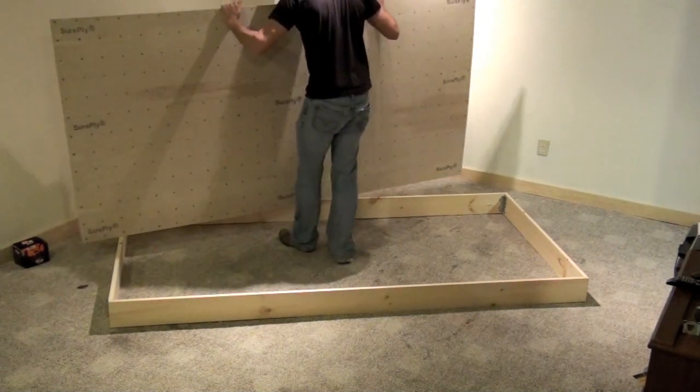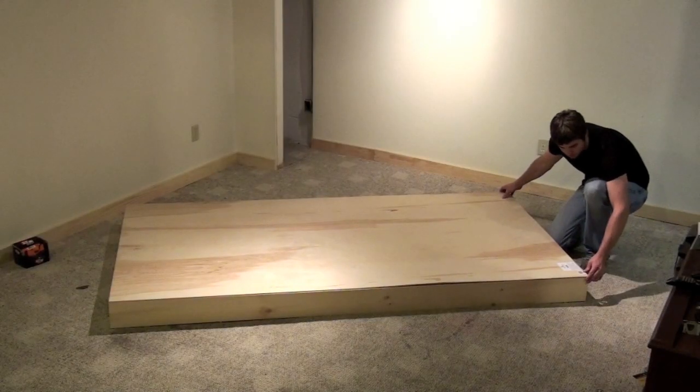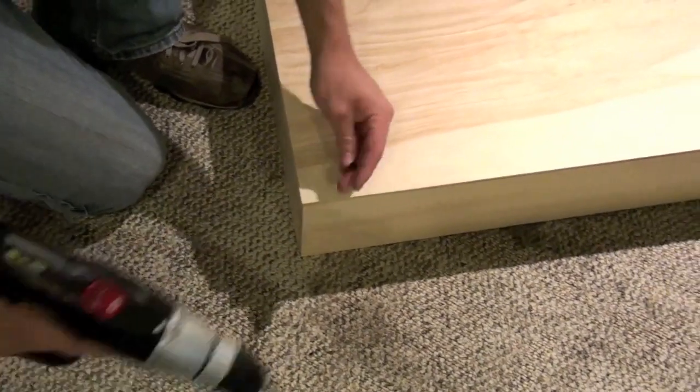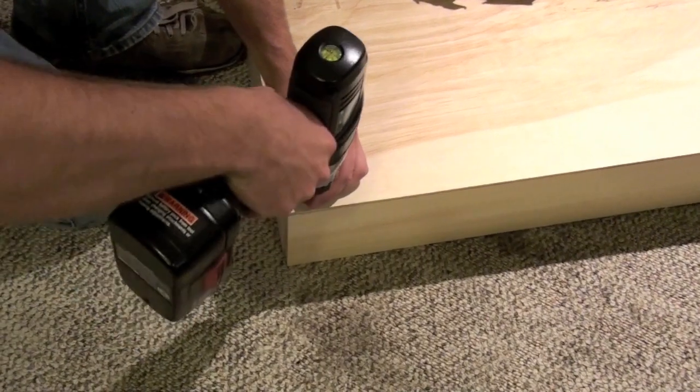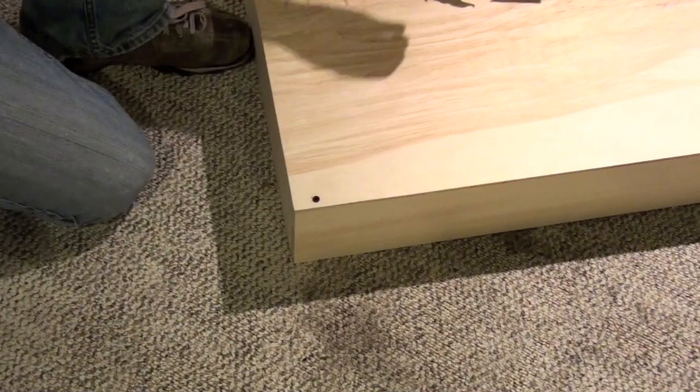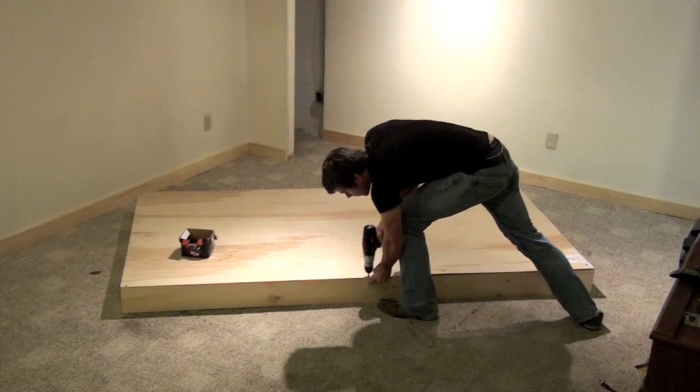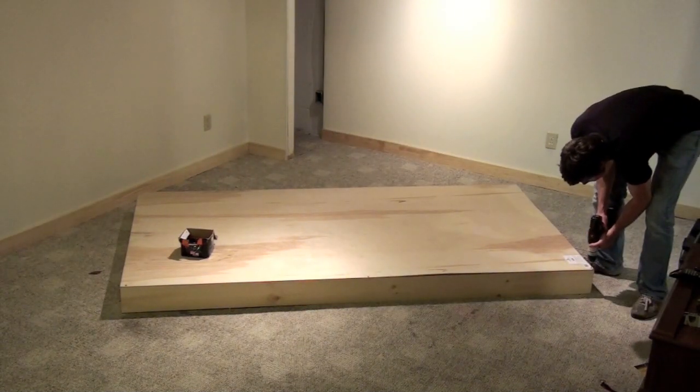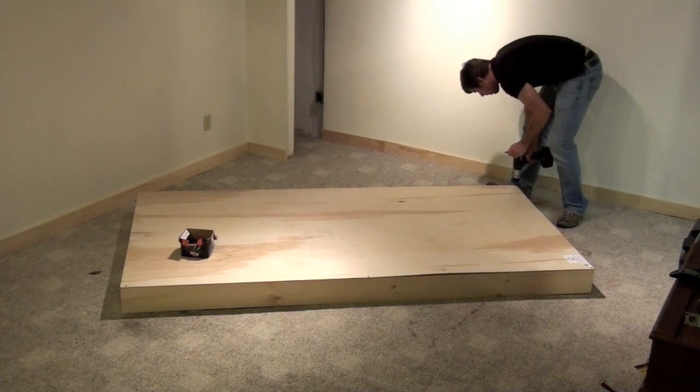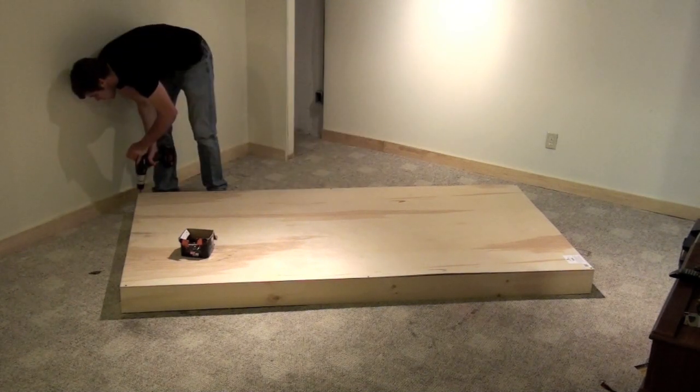We'll then lay our plywood on top and get it nice and straight, and then put a screw in the corner, put one in the middle. Put another screw in that corner, and repeat the pattern on the other side. So you should have a total of six screws holding the plywood to the frame.